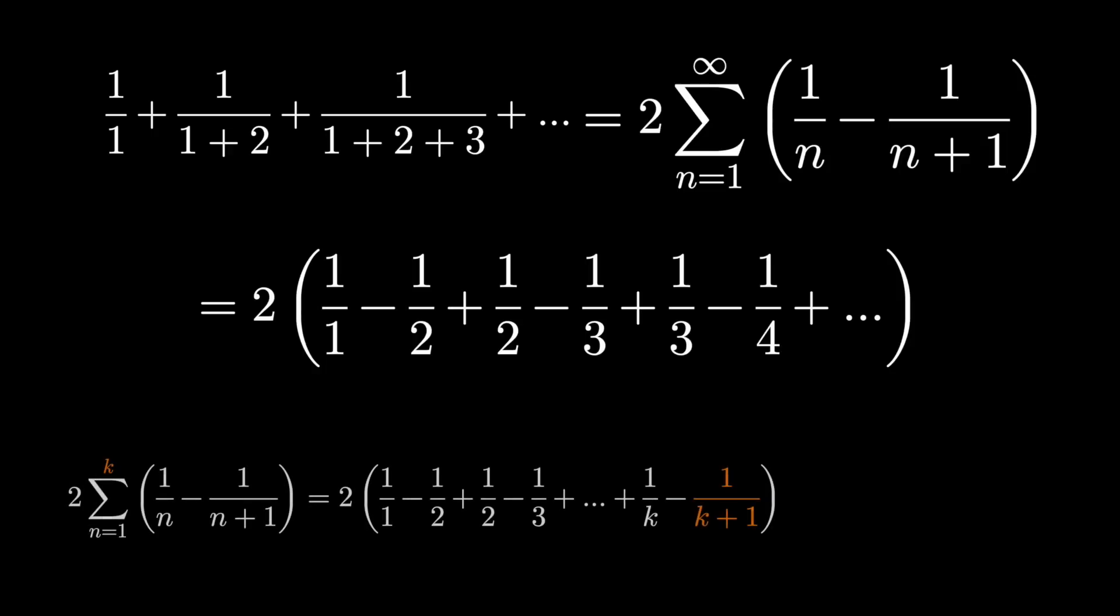But if we were to stop writing terms at some point, the pattern would look like this. The 1 over 1 would never cancel out, but all of the middle terms would. We'd be left with just minus 1 over k plus 1, k being the number of terms in our series we wrote. This is what's called the partial sum, and it lets us find our infinite series by taking its limits.